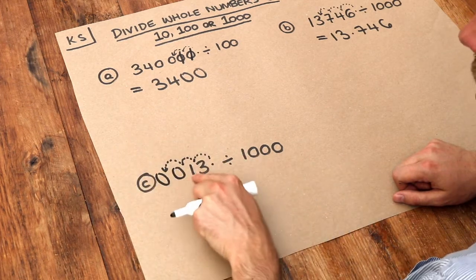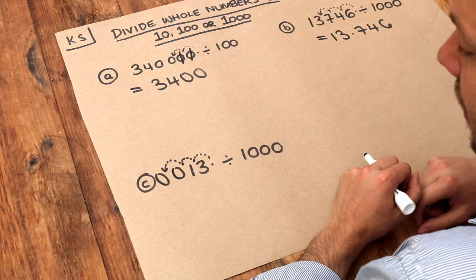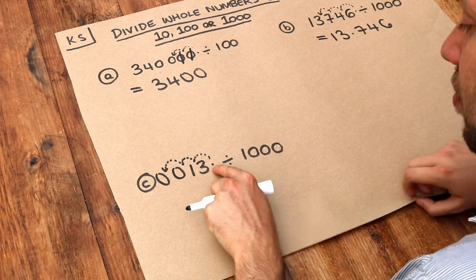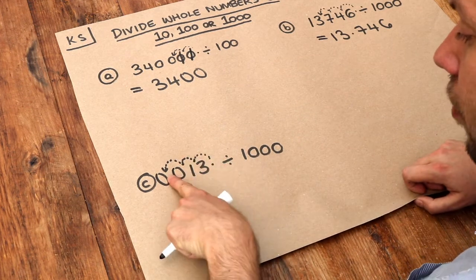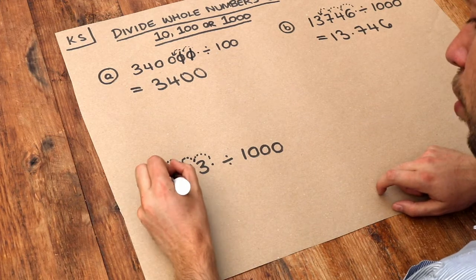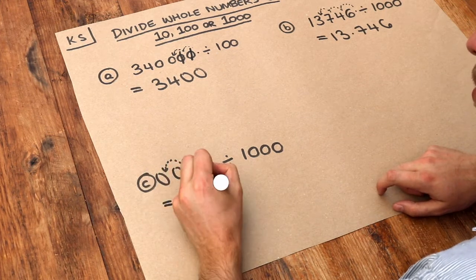This is because 0013 is just the same as 13—we have zero hundreds and zero thousands. So now the decimal point goes one, two, three places, in between those two zeros there, and that means we have 0.013.